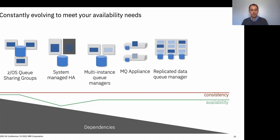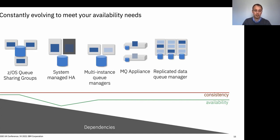Looking at message availability — this is really around ensuring that you can always get access to messages held on queues in a queue manager. We have a number of HA capabilities in the product developed over time. On the z/OS platform, you have queue sharing groups, which is the premier HA offering, giving you the best availability by having multiple queue managers able to access the same messages stored in the coupling facility.